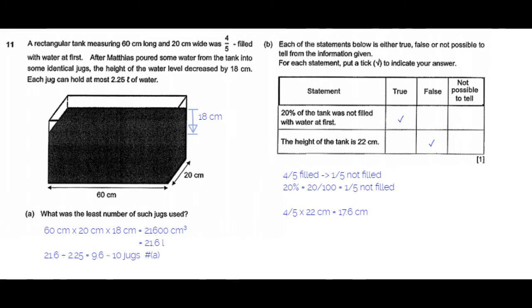The height of the water should at least be 18 cm for it to be able to decrease by 18 cm and come down to 0. It can always be more than that. In that case, it would be not possible to tell. But here when the height of the tank is given to be 22 cm, this statement is false.